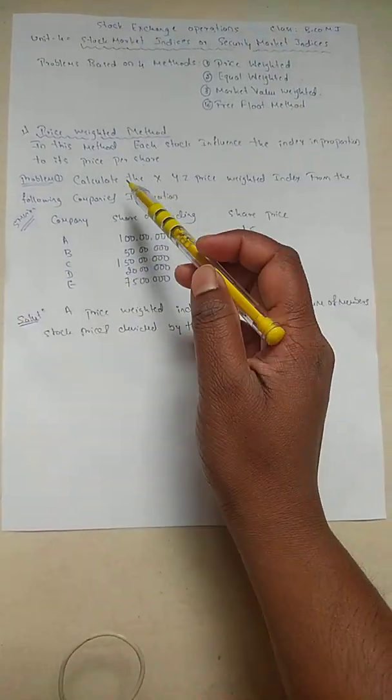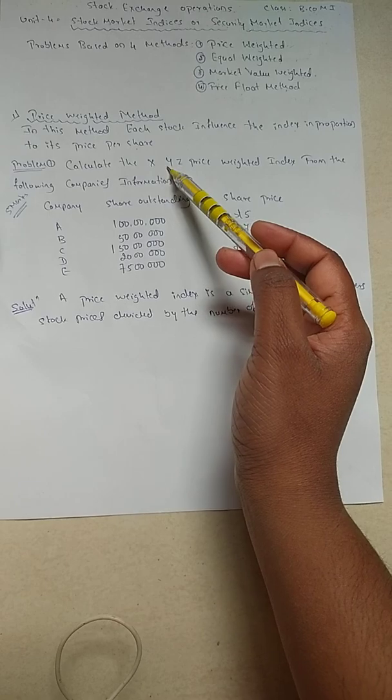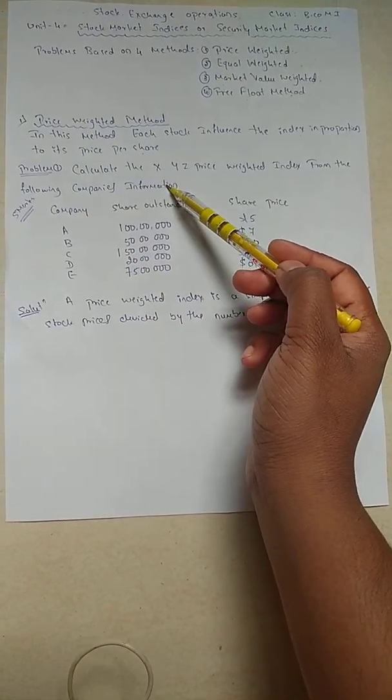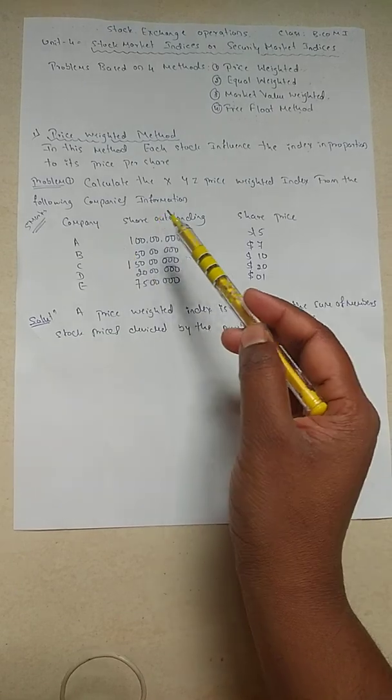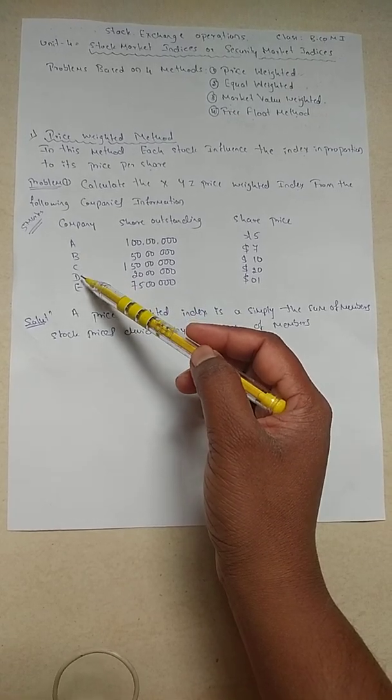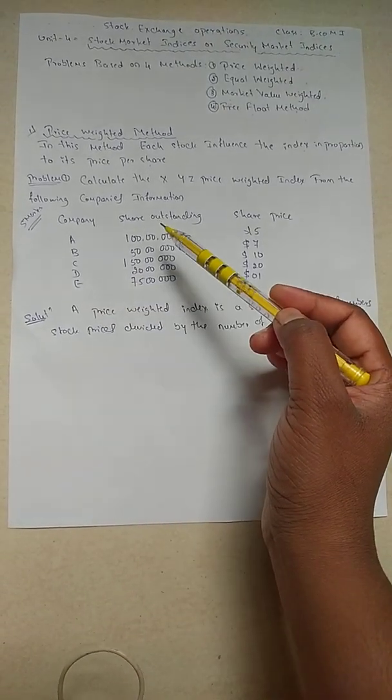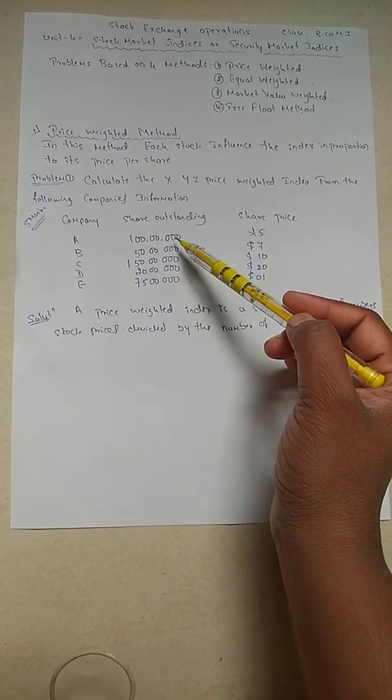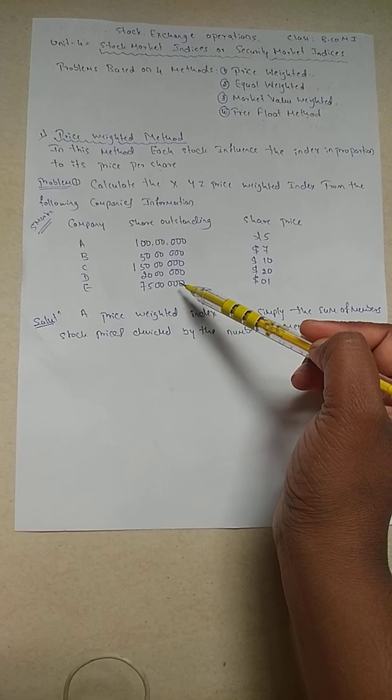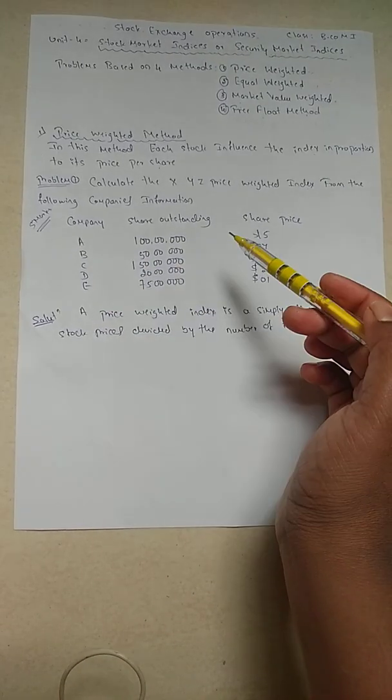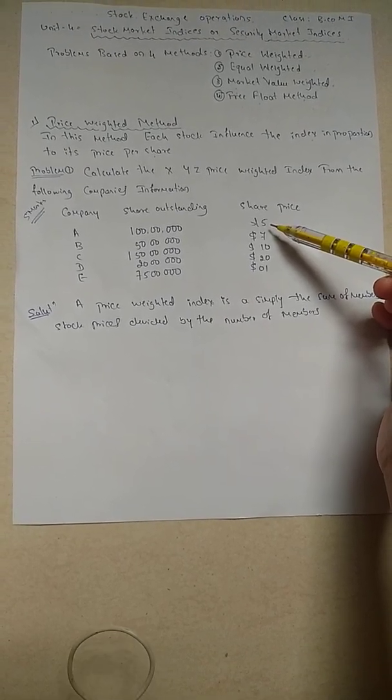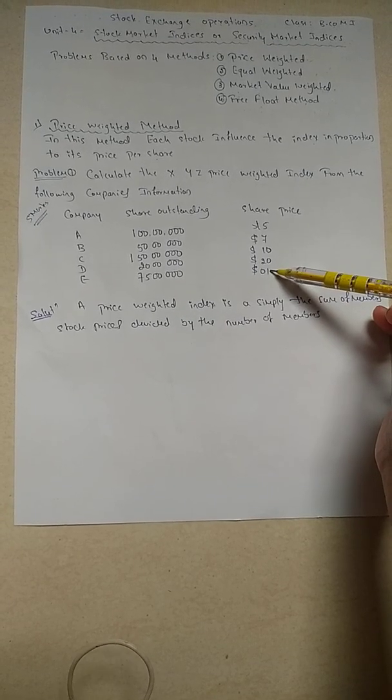This is a problem I have taken for five marks. Let's see what this problem says. Calculate the XYZ price weighted index from the following company's information. Here we have a table: company, share outstanding, and share price. Companies A, B, C, D, and E. Share outstanding is 1 crore, 50 lakh, 1 crore, 50 lakh, 20 lakh, and 75 lakh. And here we have price of shares in dollars: A company is $5, B is $7, C is $10, D is $20, and E is $1.